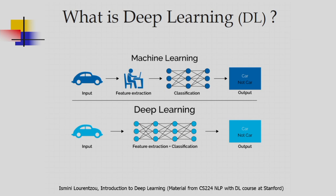I want to show the distinction between machine learning and deep learning. In machine learning, from the input image I extract features, and based on these features I do the classification — first feature extraction, then classification. In deep learning, I can simultaneously extract features and do classification. Directly from the input image, feature extraction and classification are done together.